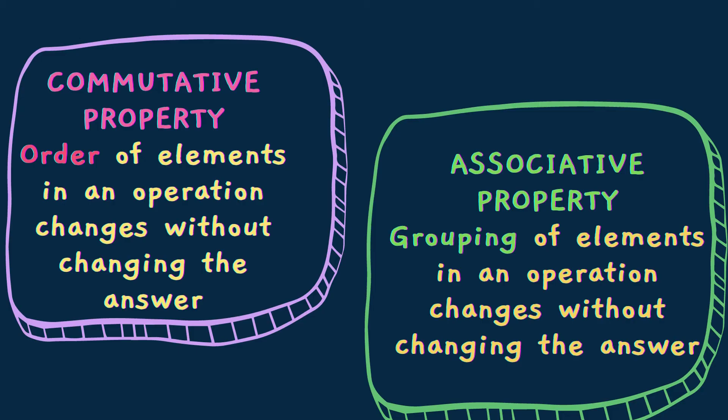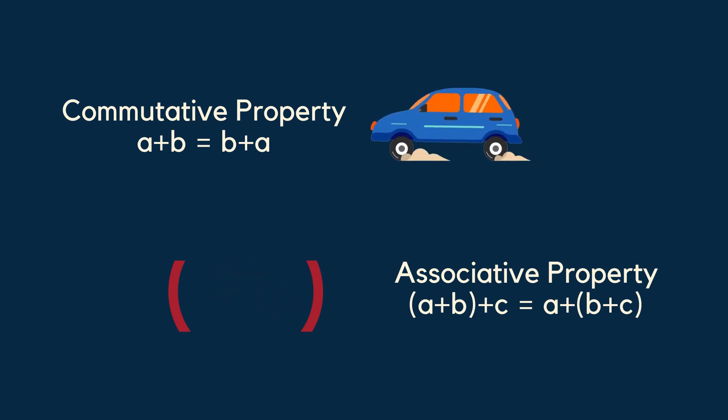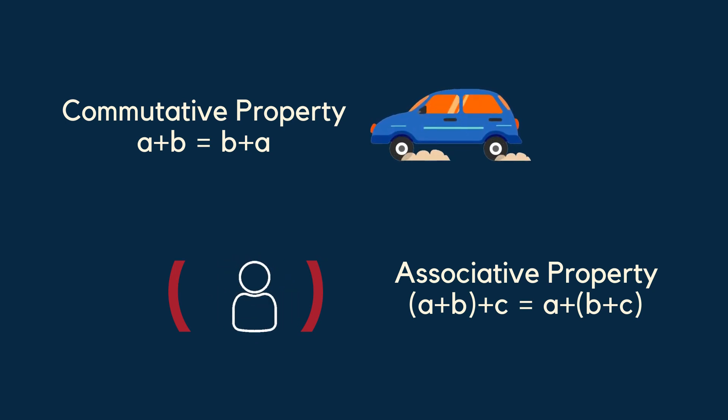So let's compare the commutative and associative properties of addition. For detailed videos on commutative property, check the description box below. Commutative property: the order of elements in an operation changes without changing the answer. Associative property: the grouping of elements in an operation changes without changing the answer. Commutative property: A plus B equals B plus A. Associative property: (A plus B) plus C equals A plus (B plus C).